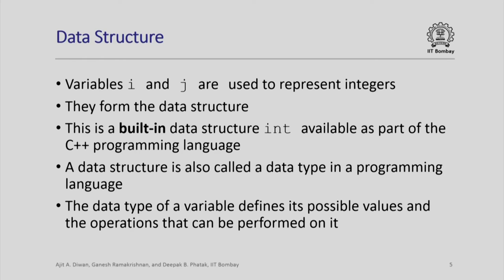A data type is also another name for a data structure. In a programming language, we may say a variable has a certain type, and we can also call it a data structure for representing values. The data type of a variable defines what are its possible values and what operations can be performed on it. For example, an int variable specifies that you can store integer values and perform arithmetic operations, comparisons, and many other operations on variables of integer type.